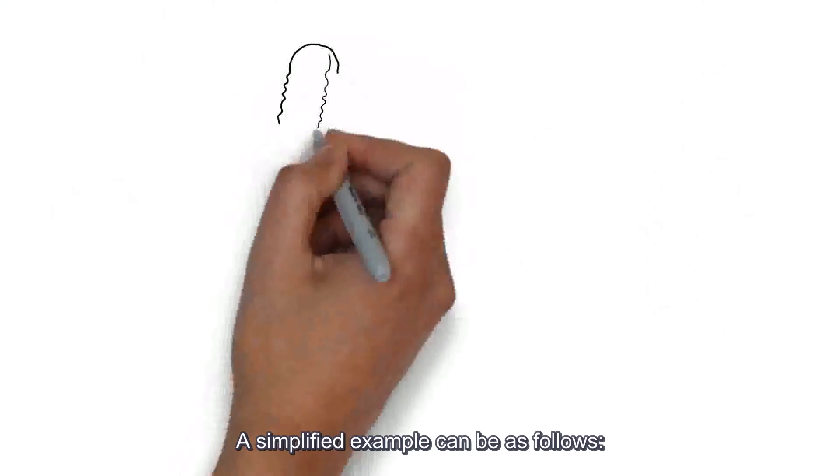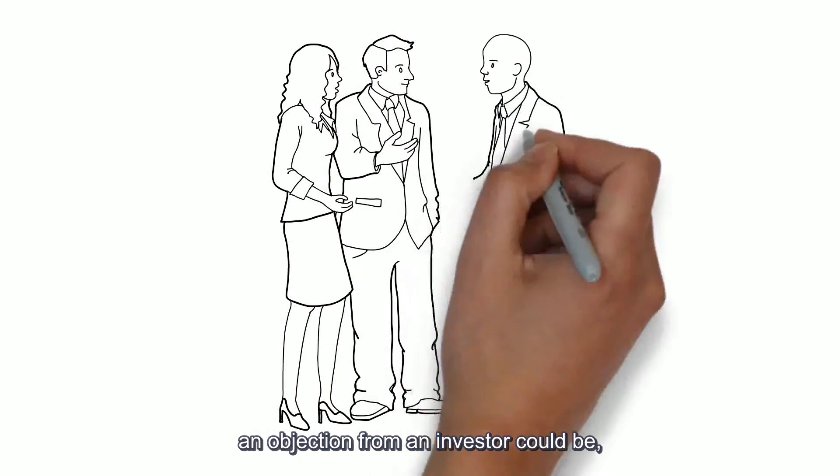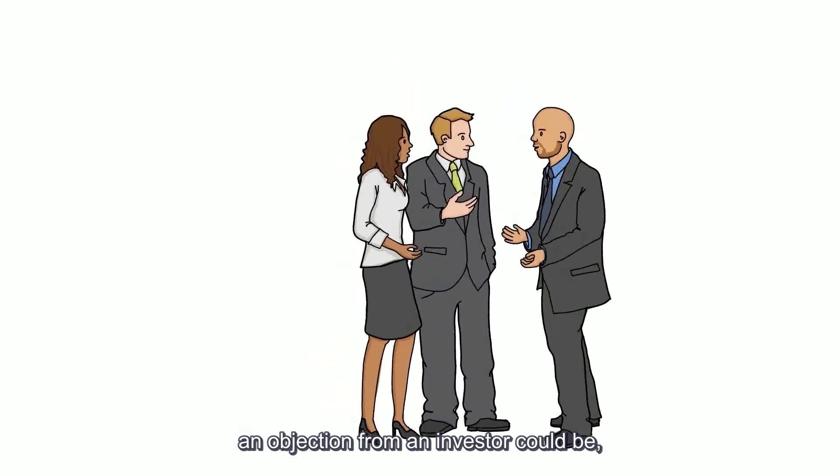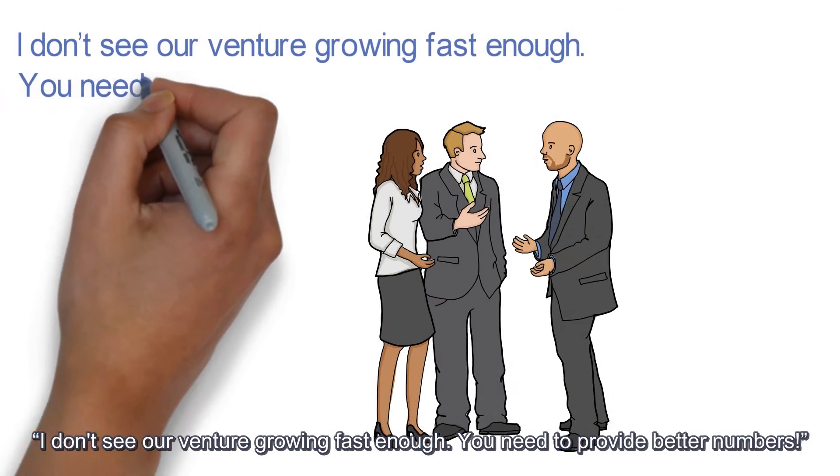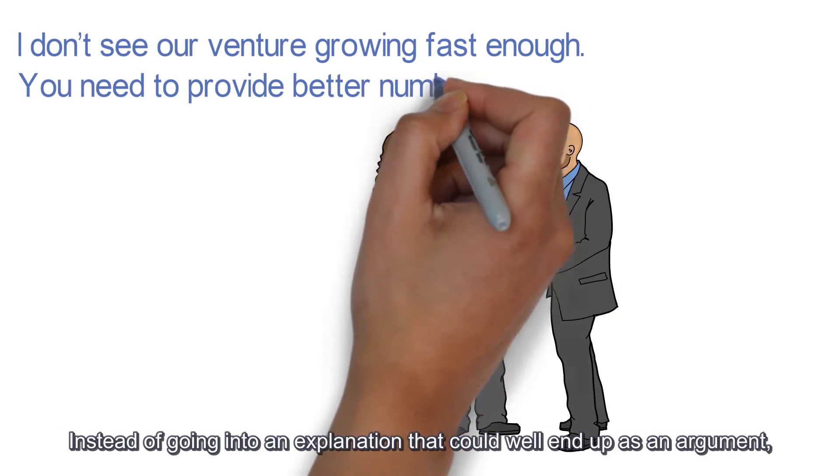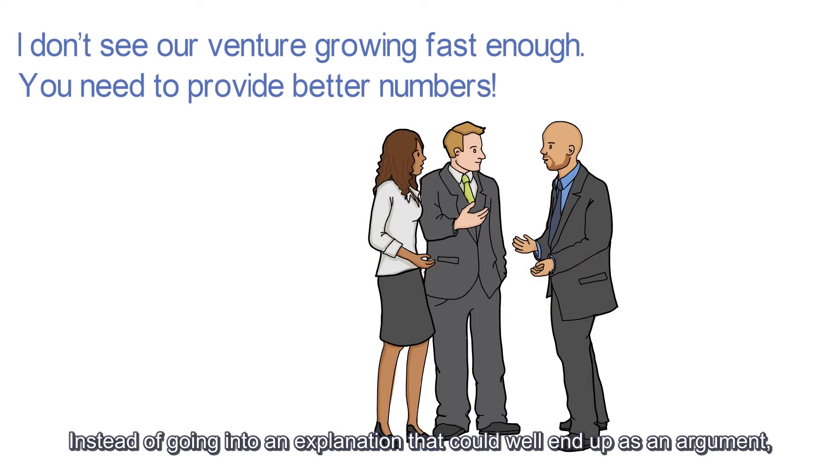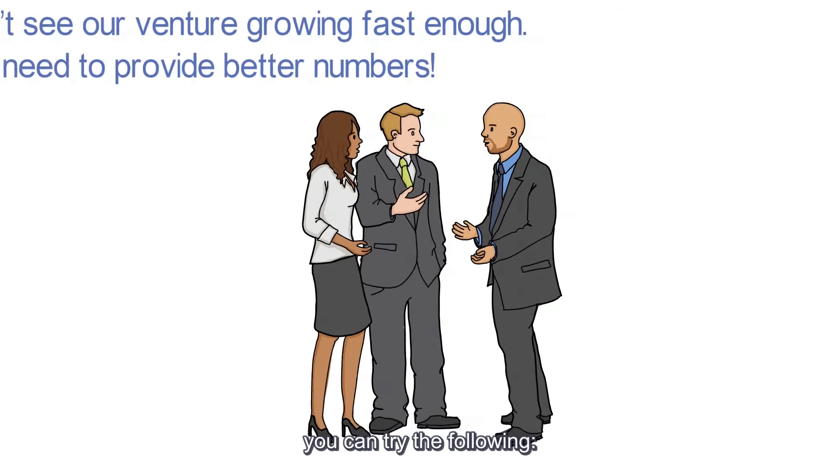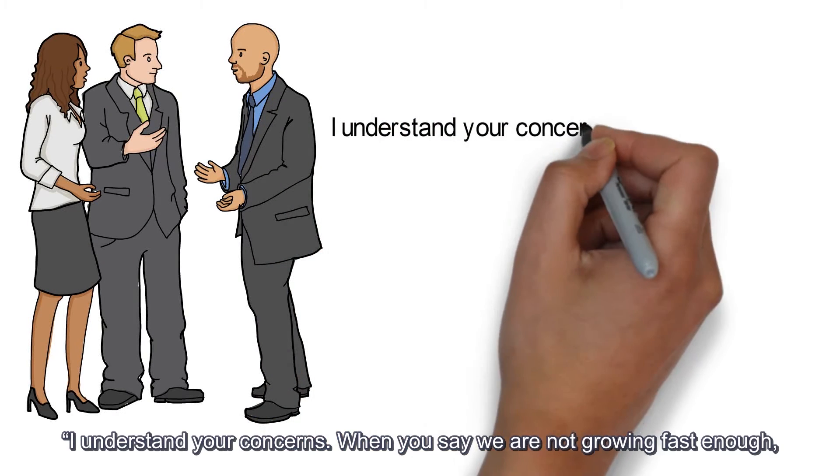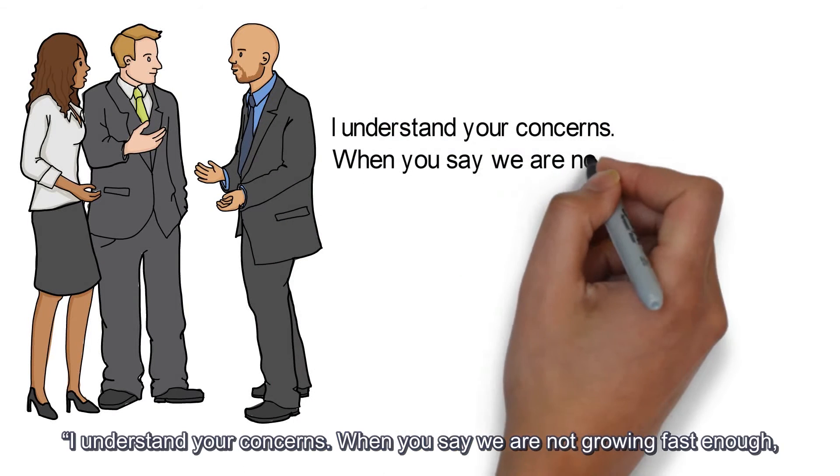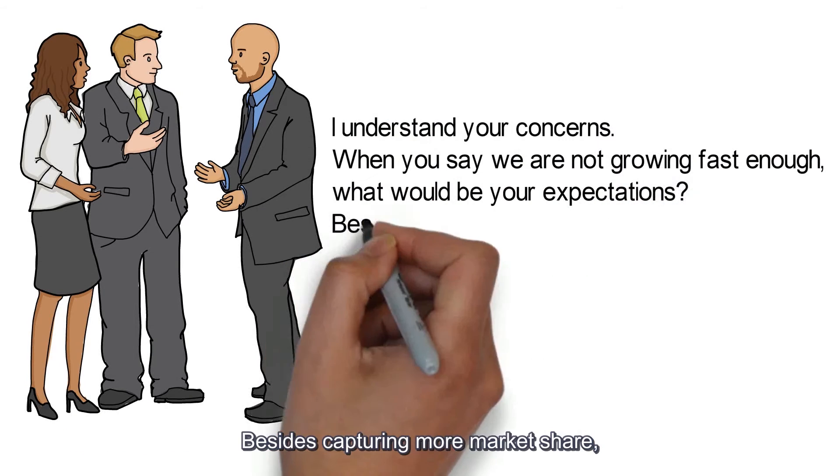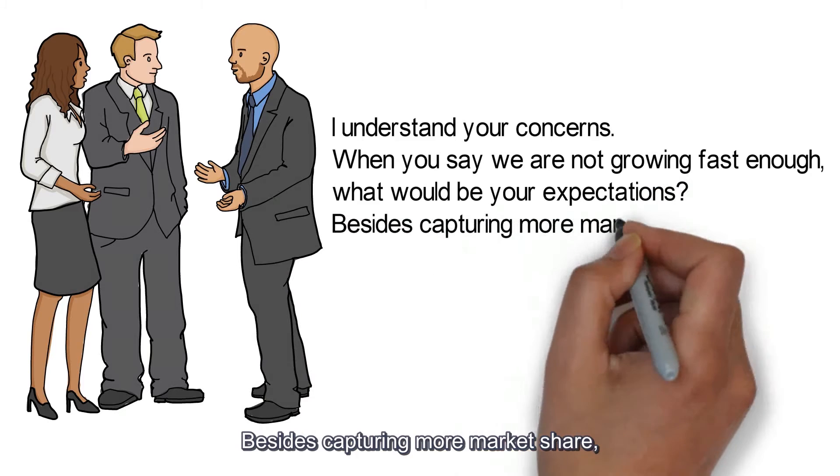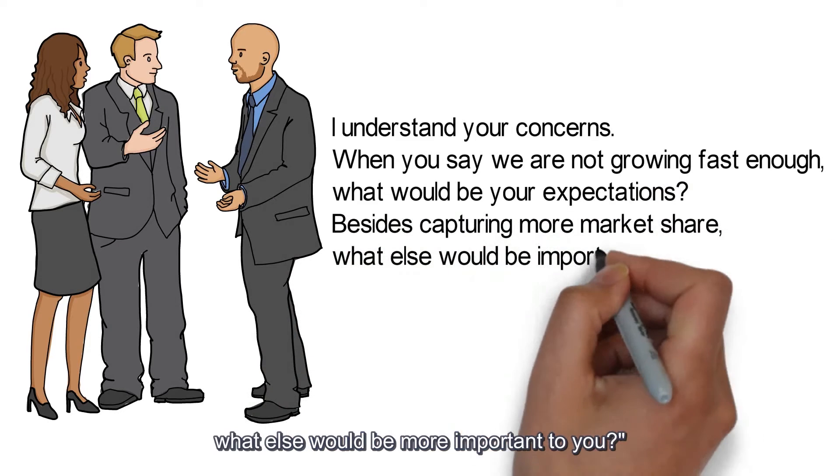A simplified example can be as follows. An objection from an investor could be, I don't see our venture growing fast enough. You need to provide better numbers. Instead of going into an explanation that could well end up as an argument, you can try the following. I understand your concerns. When you say we are not growing fast enough, what could be your expectations? Besides capturing more market share, what else would be more important to you?